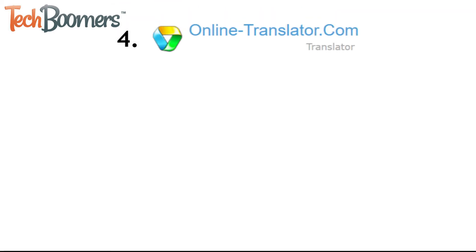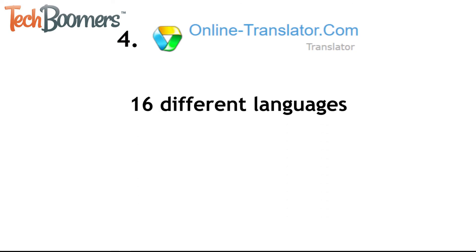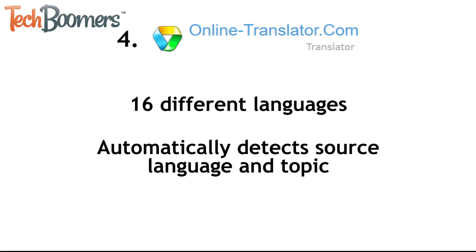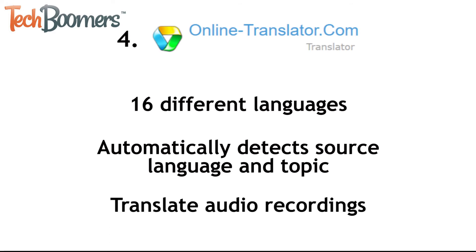The next translating tool we'd recommend trying is called the Prompt system on online-translator.com. It has the ability to translate 16 different languages and can automatically detect the source language and topic of the text you enter to be translated. It also allows users to capture an audio recording of someone speaking and instantly translate it into text. It's a great all-in-one translation tool and is free to use.